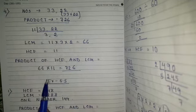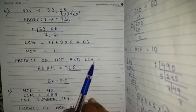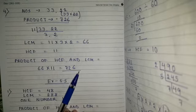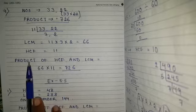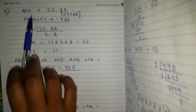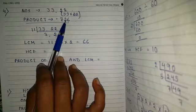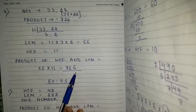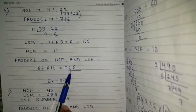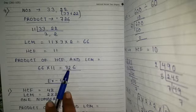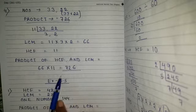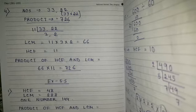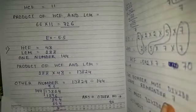So HCF equals 11. Now product of HCF and LCM: 66 into 11 equals 726. Again using the formula: product of two numbers equals 726 and HCF into LCM equals 726, so these two are equal. This confirms that product of two numbers equals HCF into LCM.